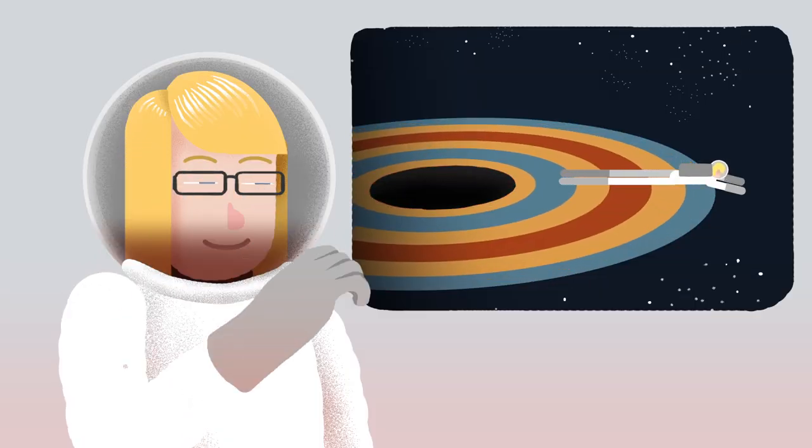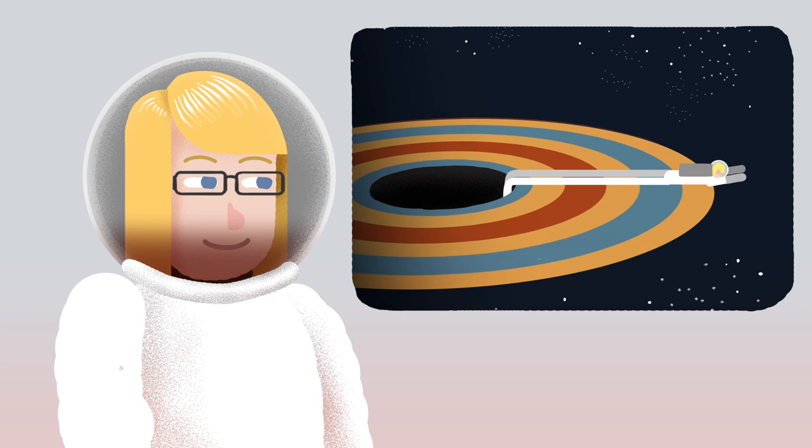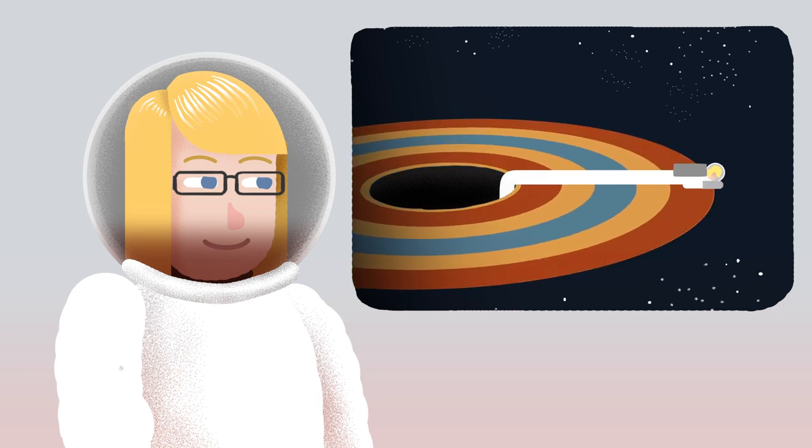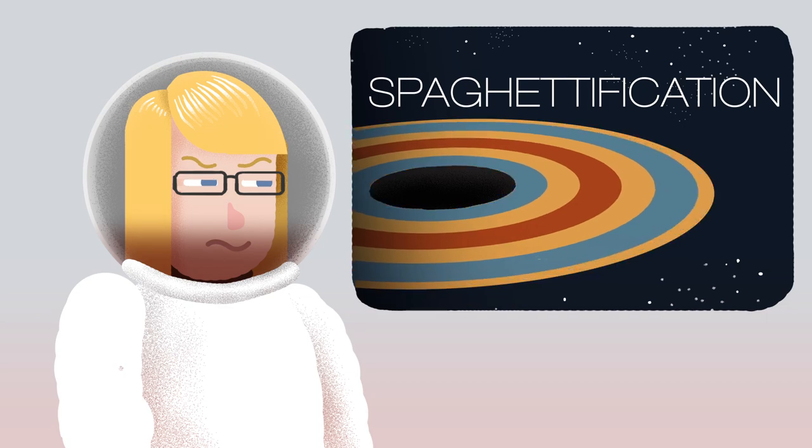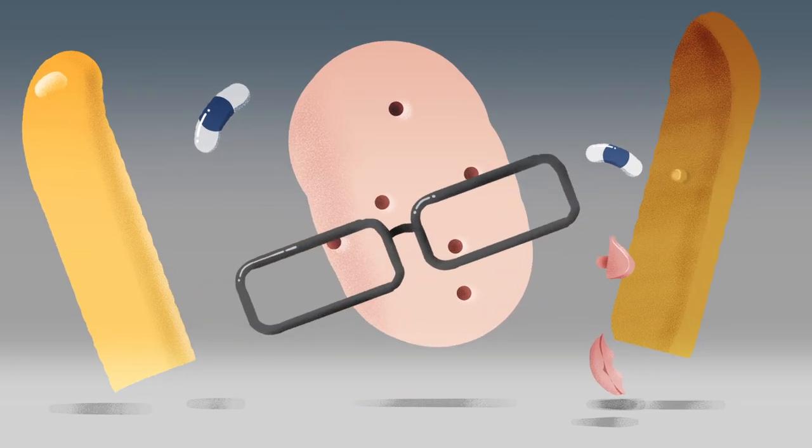But what would happen to Liz if she stepped in? Well, if she fell in feet first, her feet would be pulled further along than her head, so she would have to endure spaghettification. She would be ripped apart and pulled into the centre, the singularity, an exotic region of zero volume and infinite gravity. Or is it?